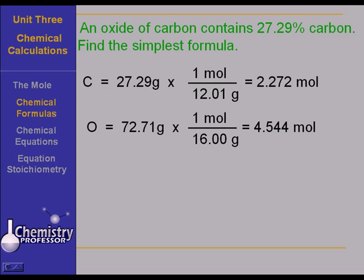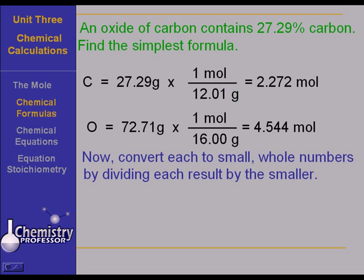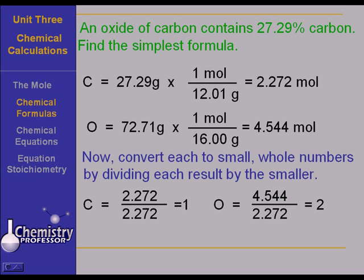Our formula tells us then that we've got 2.272 mole carbon and 4.544 mole oxygen. But we need it to be small whole numbered ratios. So, we convert it to small whole numbers by dividing each result by the smaller, which happens to be the number of moles of carbon. The carbon is 2.272, of course, is going to equal 1. And the oxygen is going to come out to be 2. And it's amazingly close here. And so, the formula is CO2.